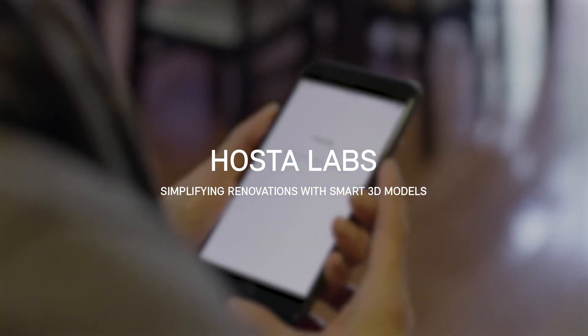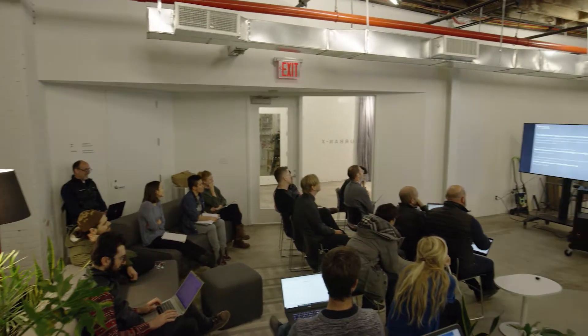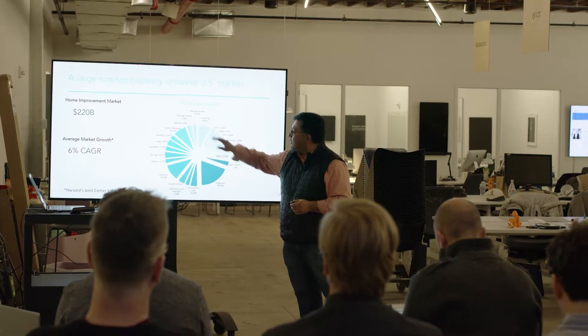With Hostile Labs, we're able to create smart 3D models of residences and commercial spaces using only regular pictures. The model is intelligent — the wall knows it's a wall, it's connected to the floor and its windows, and it has dimensions and materials. It's all that metadata inside the model that differentiates it from other types of regular 3D models.